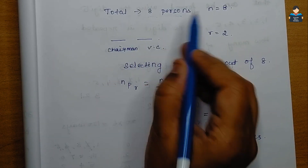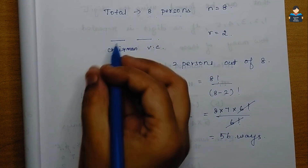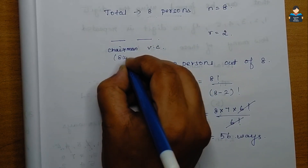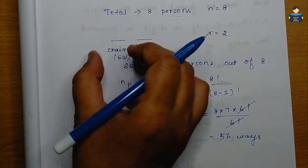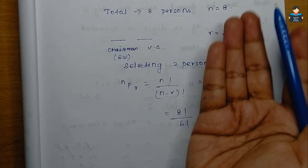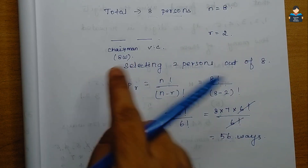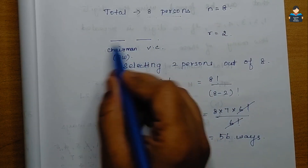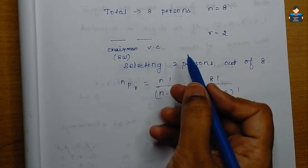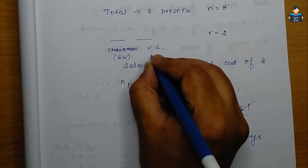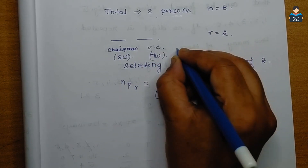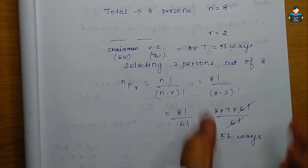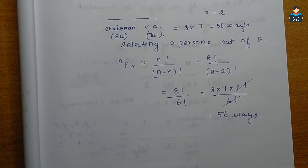We can also verify using the multiplication rule. For the chairman position, any of the 8 persons can be chosen — 8 ways. Since one person cannot hold both positions, for the vice-chairman position there are 7 remaining persons — 7 ways. So by multiplication rule: 8 × 7 = 56 ways.